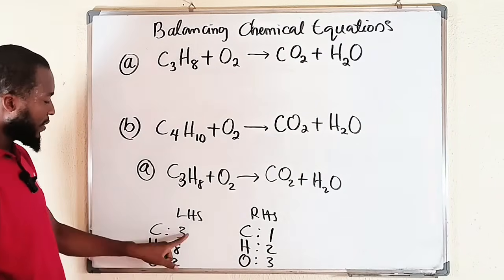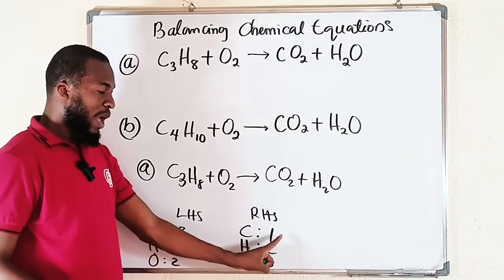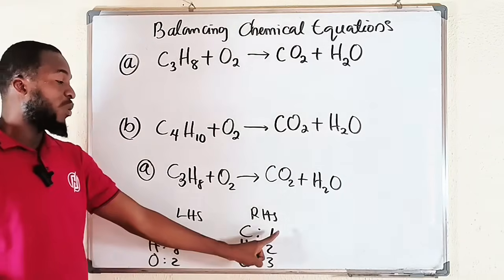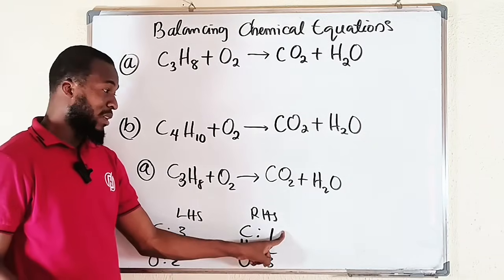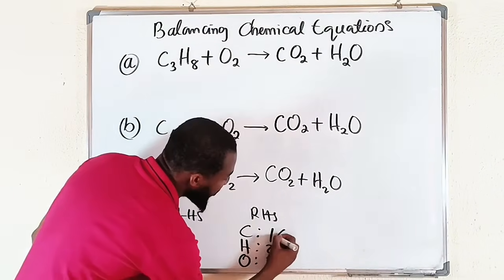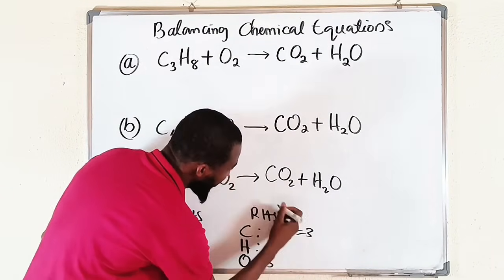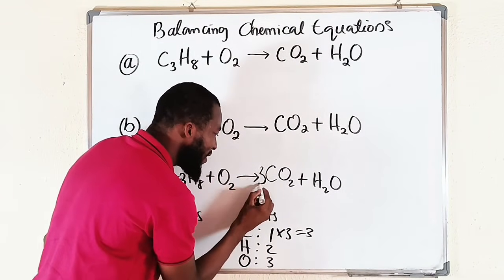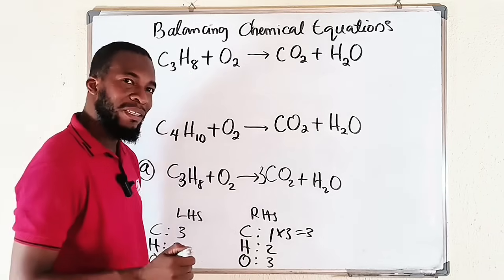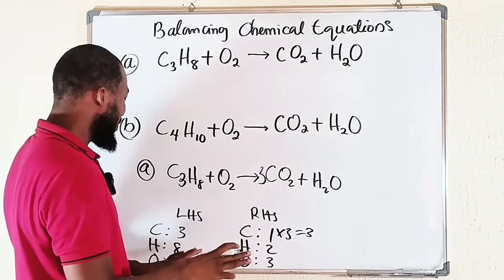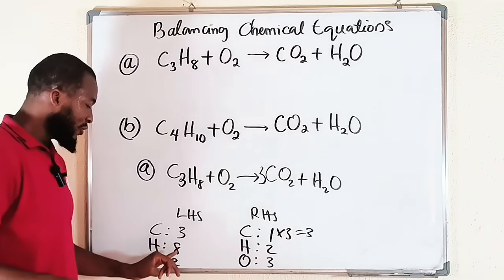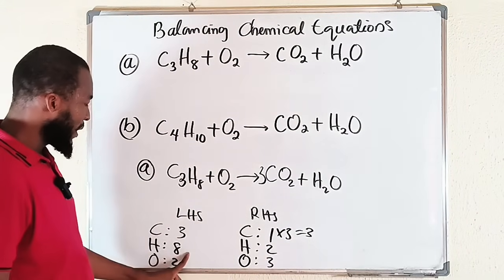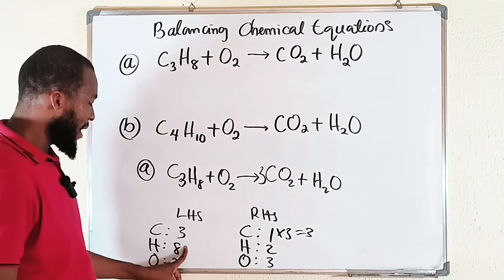Let's start with carbon. Since we have 1 carbon on the right and 3 on the left, we need to compensate by multiplying CO₂ by 3 to make it 3 carbon atoms. We have now balanced carbon — 3 atoms on each side.